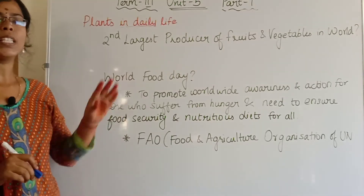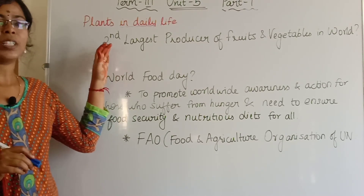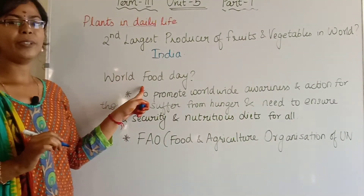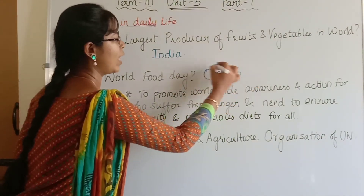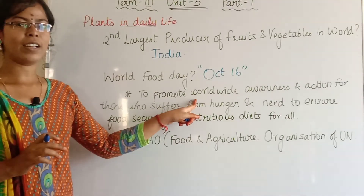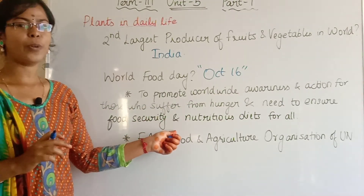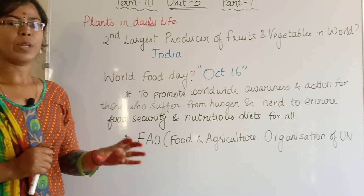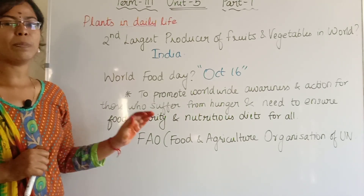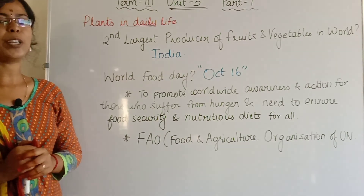I have two questions for you. Do you know which is the second largest producer of fruits and vegetables in the world? Yes, it is our country India. And another question: World Food Day is celebrated on October 16 by F.A.O. — the Food and Agriculture Organization of the United Nations — to promote worldwide awareness and take action against hunger, and to ensure food security and nutritional diets for all. I hope you understand the concepts well. If you have any doubt, please do comment. In the next video, we will see part 2 of this chapter. Thank you for watching.